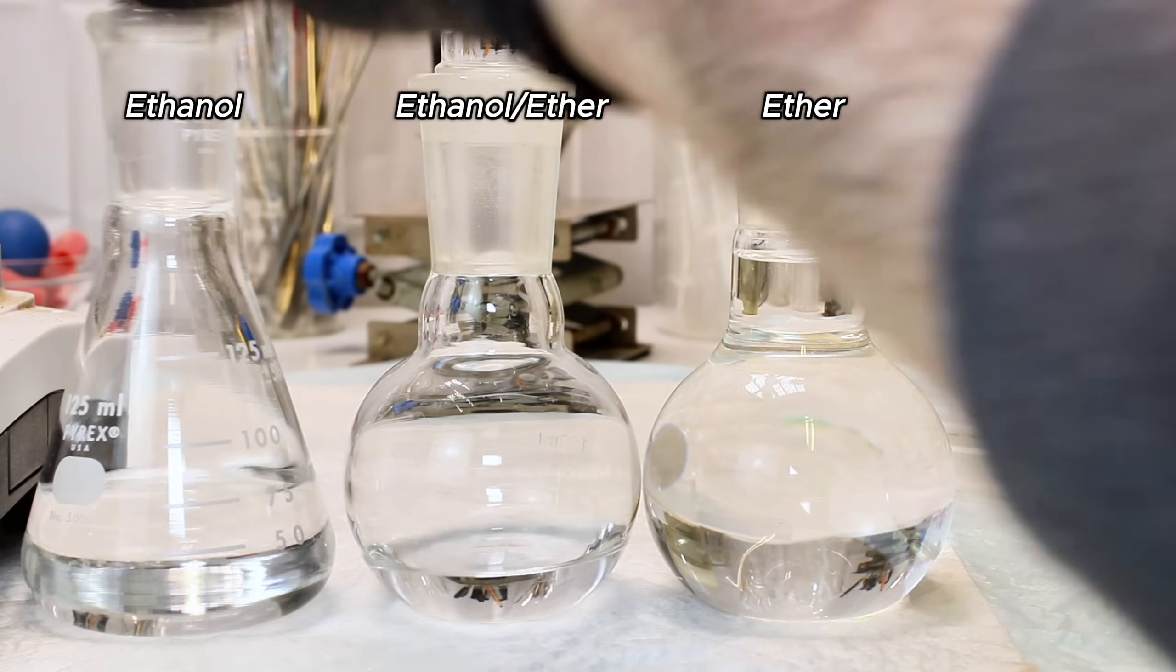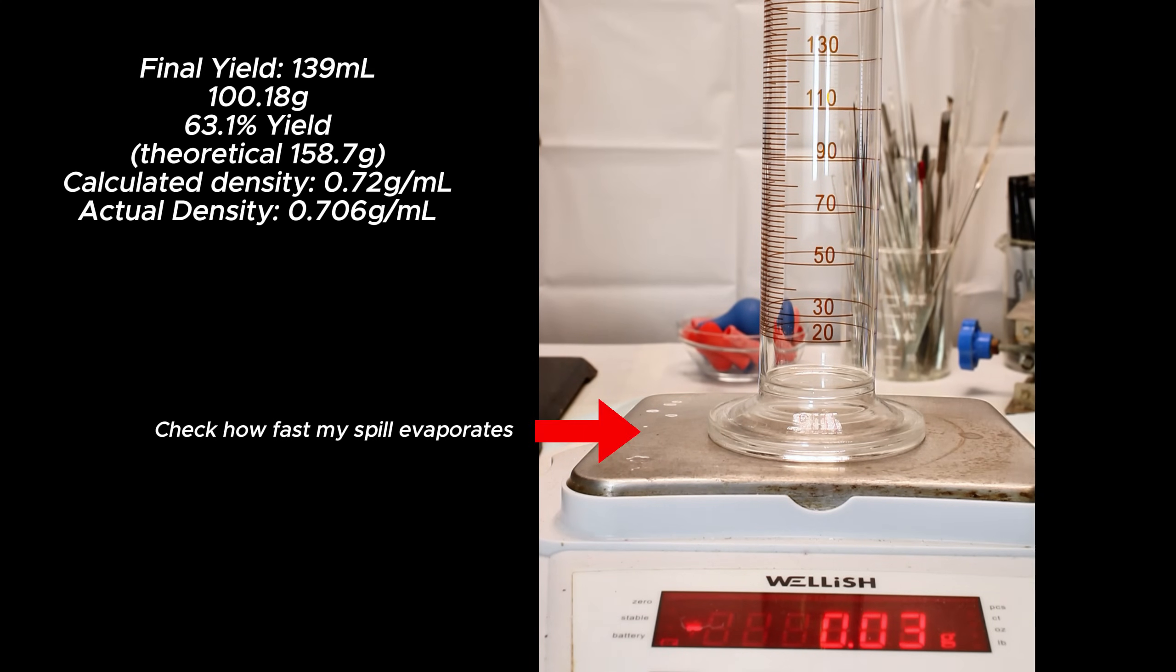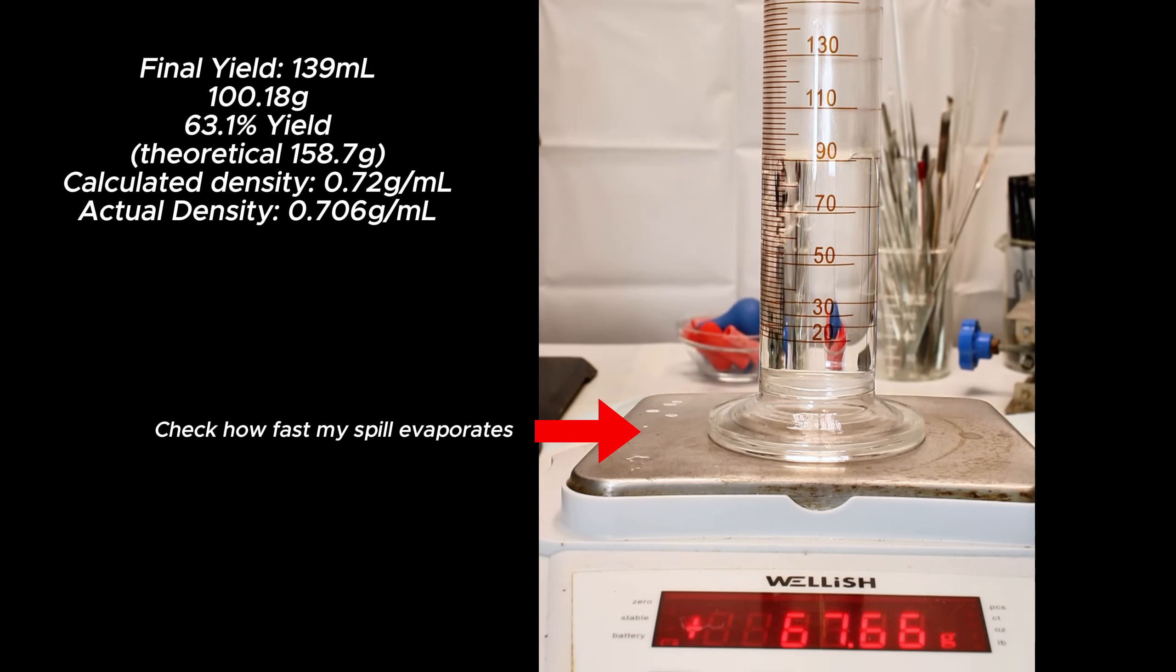In the end, this is what I'm left with. When I weigh my pure ether, I got a yield of 139 milliliters or 100.18 grams, which represents a 63.1% yield and a density of 0.72 grams per milliliter. This density is likely not accurate with such imprecise glassware, but it's close enough to tell me that my ether is mostly pure.